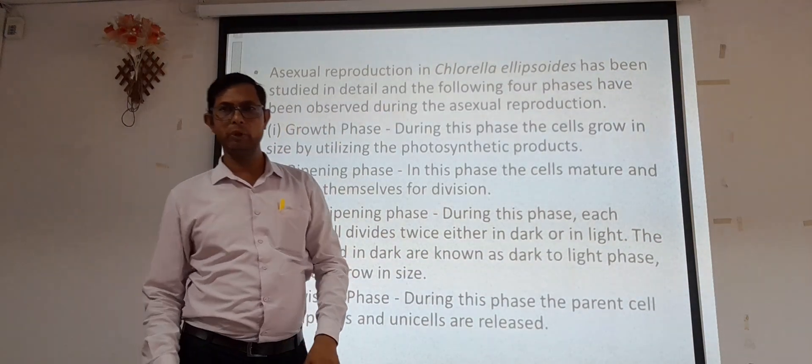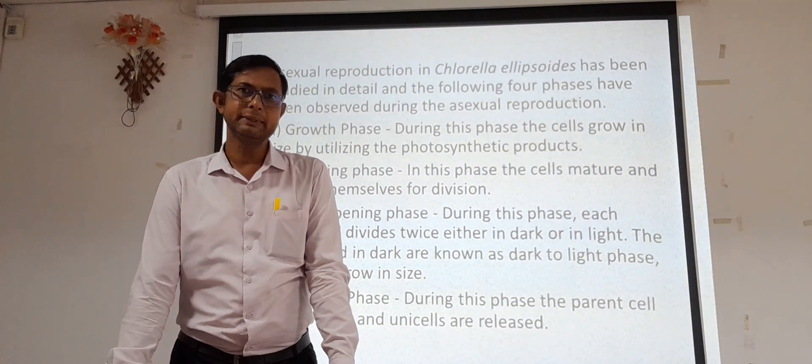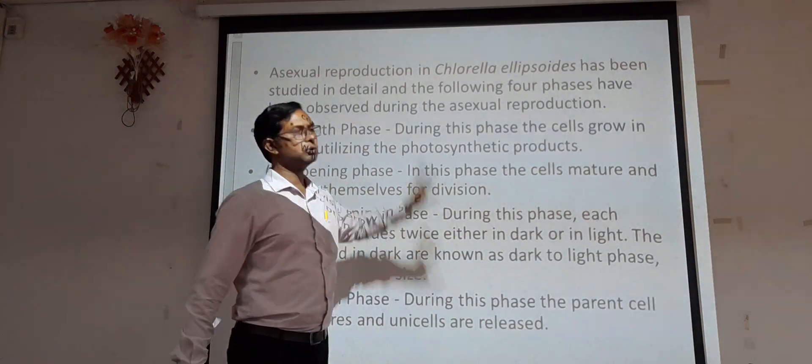This is the asexual reproduction discussed in Chlorella, one of the organisms of Chlorophyceae, mostly studied with reference to asexual reproduction. In today's lecture, we have discussed two topics: the systematic position and reproduction in Chlorophyceae, which takes place by three different ways — vegetative, asexual, and sexual reproduction. Watch this video to understand the concepts of reproduction and systematic position. Thank you.